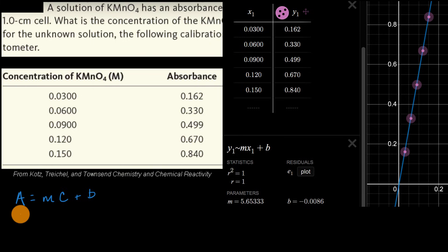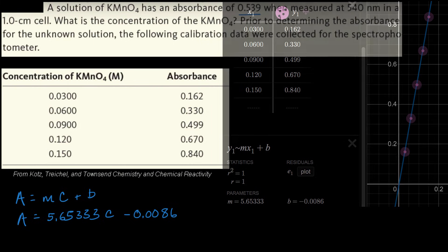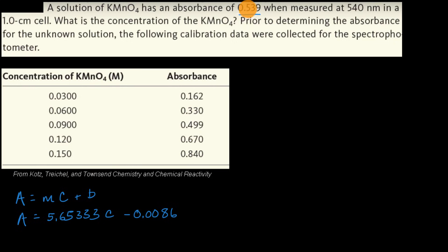This tells us that our absorbance equals 5.65333 times our concentration minus 0.0086. Now they've given us what A is. They told us our absorbance is 0.539.